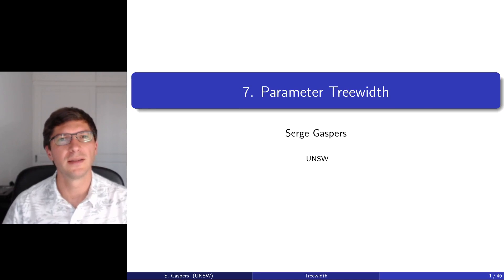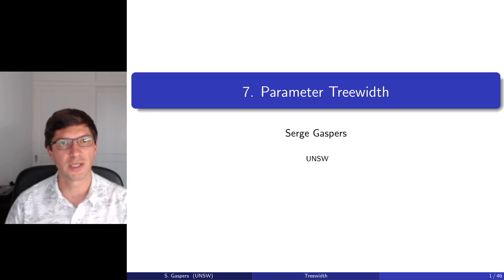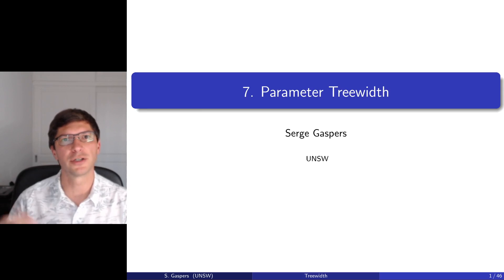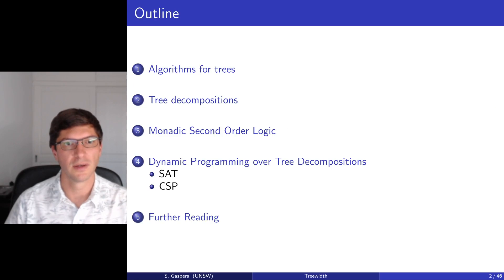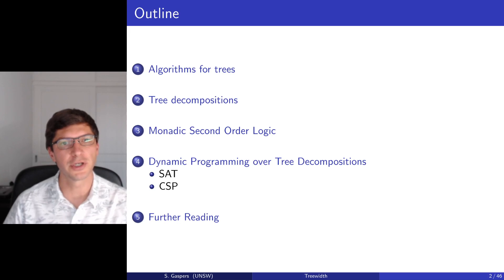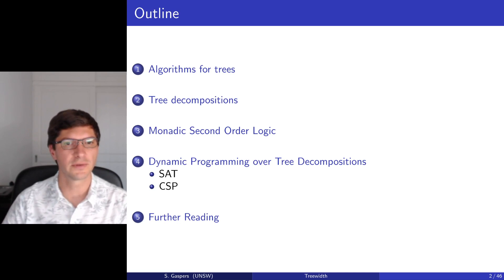This lecture is about tree widths. Tree widths measures how tree-like a graph is. Trees have tree widths one, and the more cycles and edges we add, the larger the tree widths becomes. To build an intuition about small tree widths graphs, we'll start with trees, look at algorithms for trees, and then think about how to generalize those algorithms to more general graphs. That's where we encounter tree decompositions, and we'll see two techniques to exploit them: monadic second-order logic and dynamic programming.